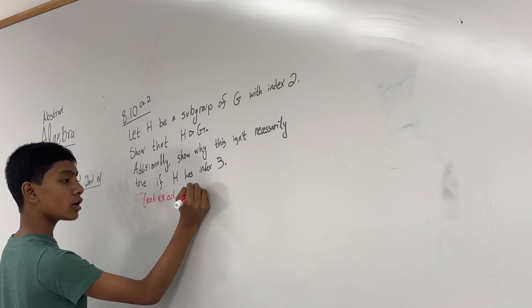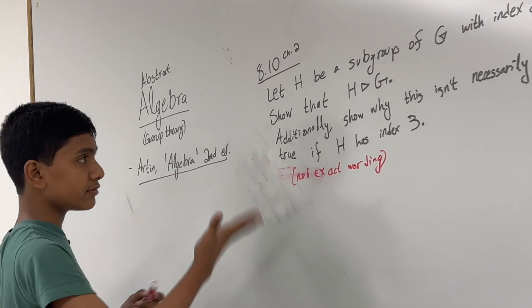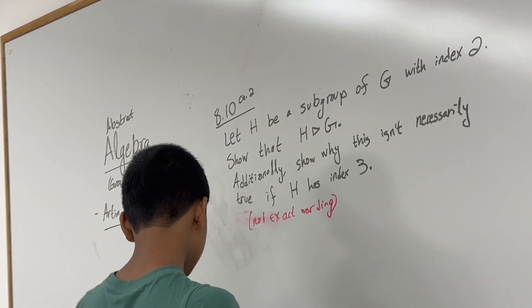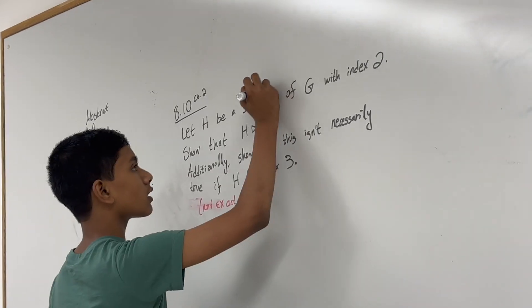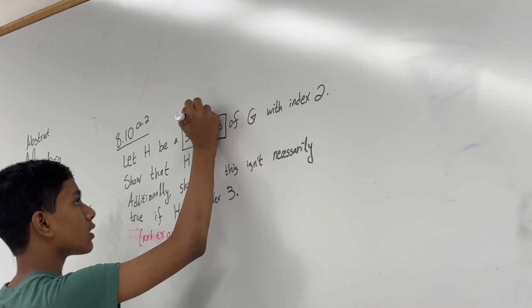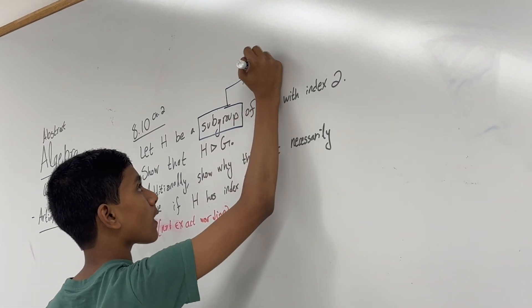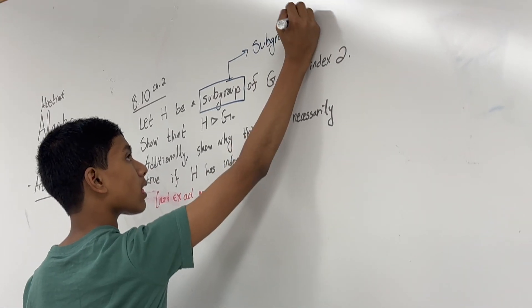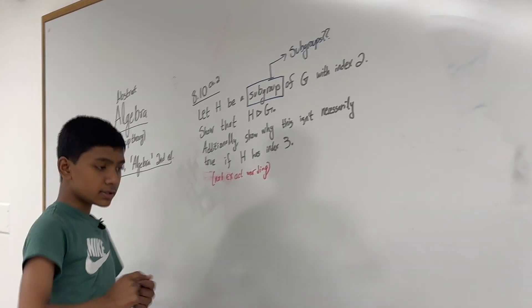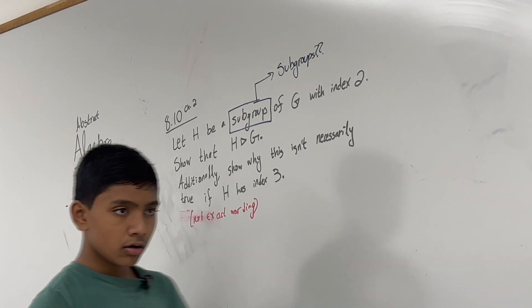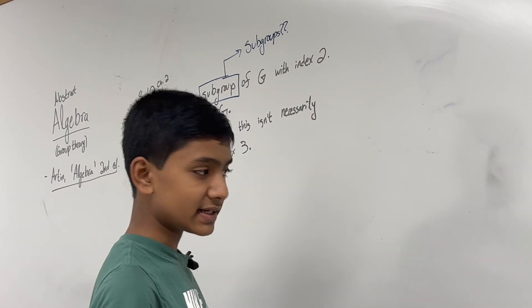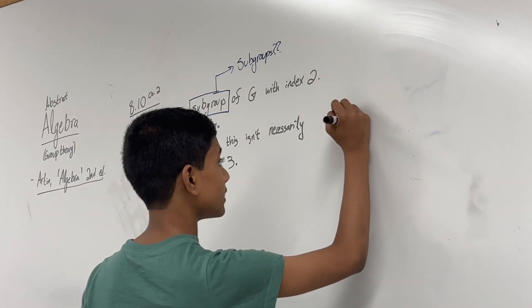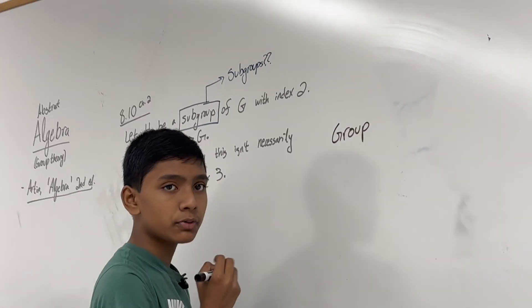So how do we solve this? First of all, what do any of these words mean? Let's examine the word subgroup first. What is a subgroup? We can see from the textbook, it's explained in the first few pages, because this is group theory, that a group must have three properties.